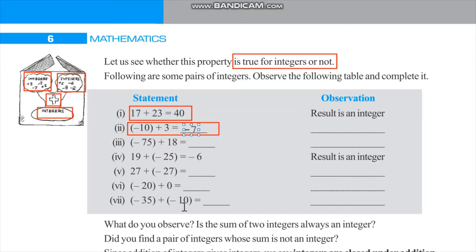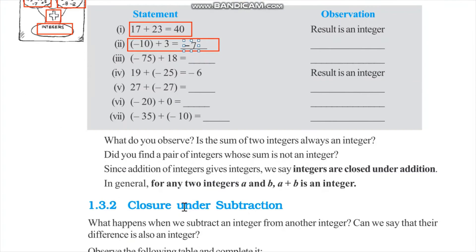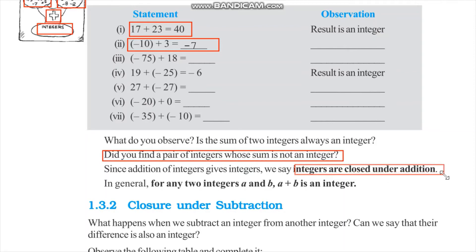I will leave the rest of them to you. You will always observe that the result is an integer. Did you find a pair of integers whose sum is not an integer? Is it possible that we ever find a pair of integers whose sum is not an integer? This is not possible because we will always remain on the number line. Since the addition of integers always gives us integers, we say that integers are closed under addition. The closure property under addition holds for the set of integers. In general, for any two integers a and b, a plus b is an integer.